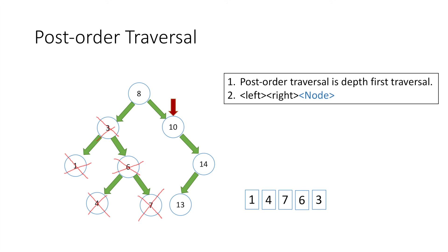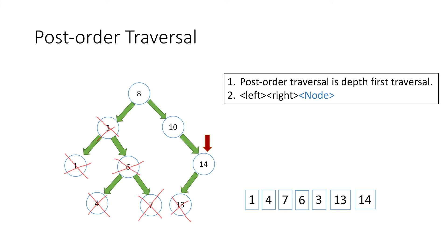At node 10 there are no nodes to its left, so we move right to node 14. For node 14 we go left to node 13. Node 13 has no left or right child, so we print its value which is 13 and mark it as traversed. Moving up to node 14, it has no left and no right to traverse, so we print 14 and mark it traversed. Back at node 10, no left and all right nodes traversed, so we print 10 and mark it traversed. Finally back at node 8, all left and right nodes are traversed, so we print its value which is 8.